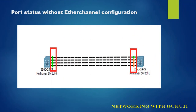In the picture we can see the status of the ports when we haven't done the EtherChannel configuration. Here we are using four ports — FastEthernet 1 through 4. Only one port is active; the rest are disabled.